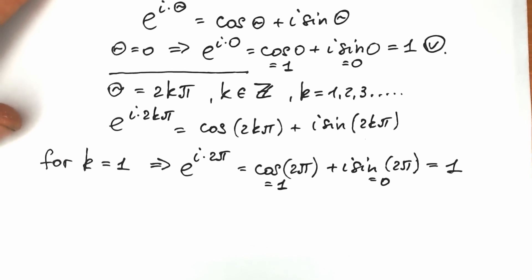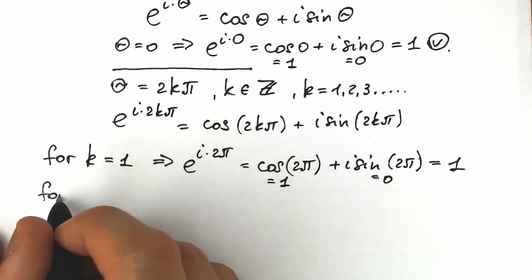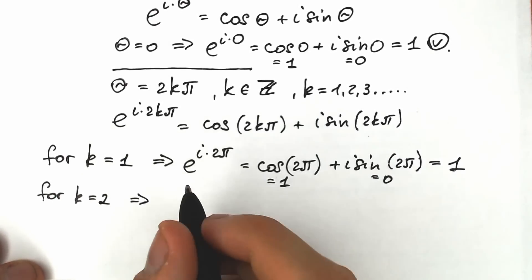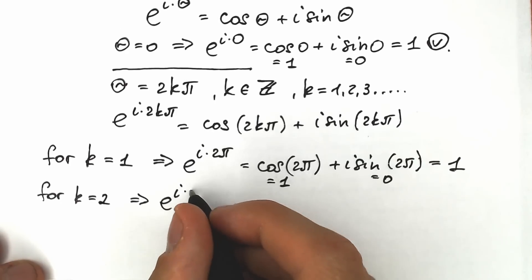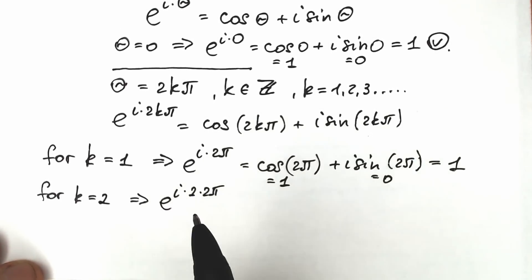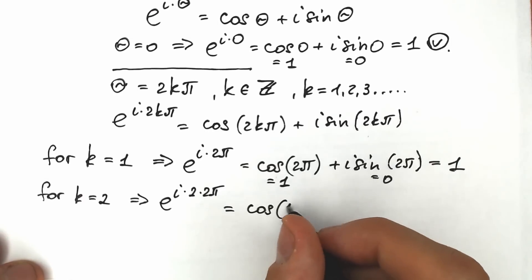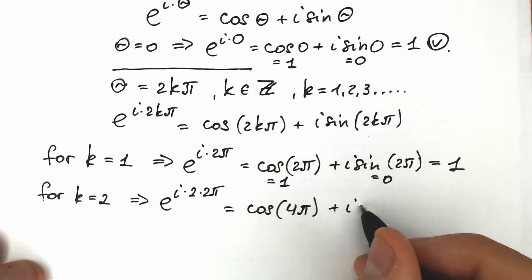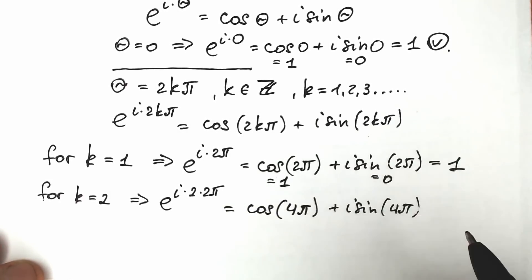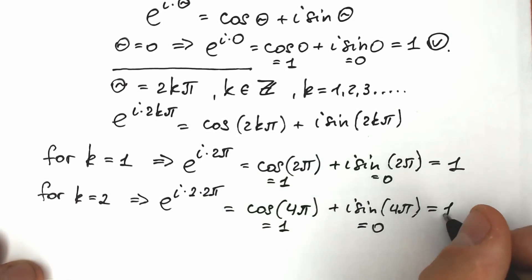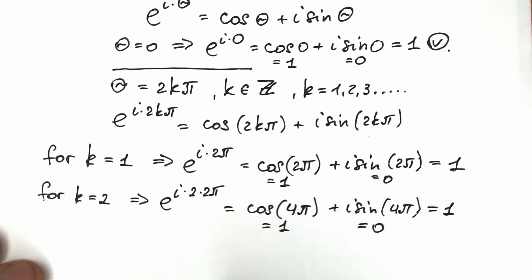Now let's check for k equal to 2. We have e to the power i times 2 times 2 pi, equal to cosine 4 pi plus i sine 4 pi. In the same way, cosine 4 pi equals 1 because of the period, and sine 4 pi equals 0. So this expression also equals 1 when k equals 2.